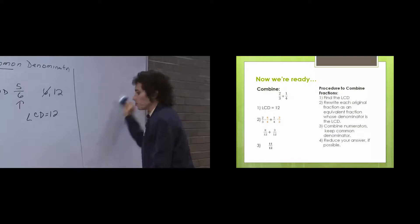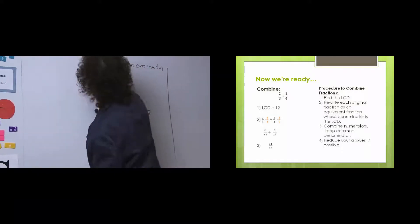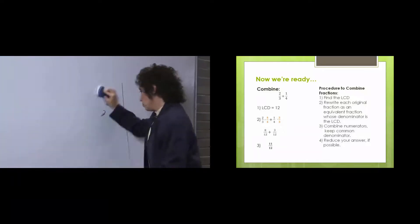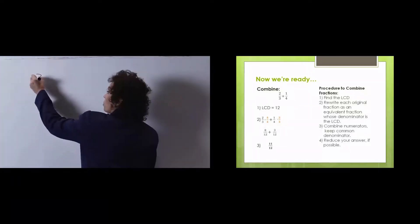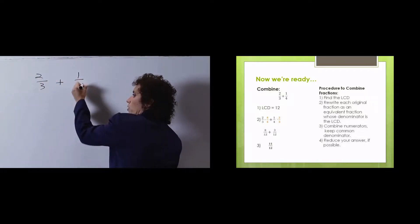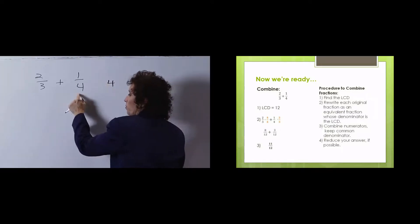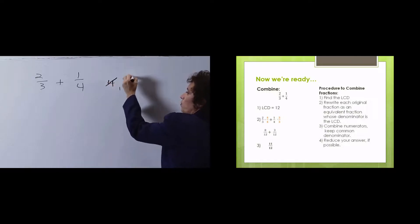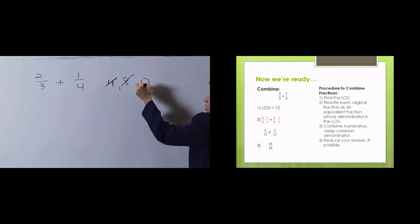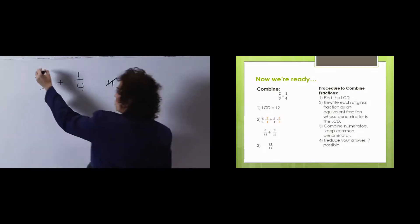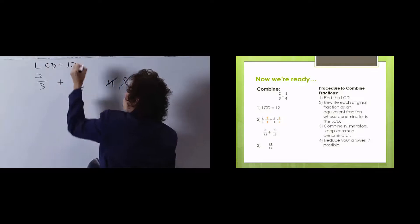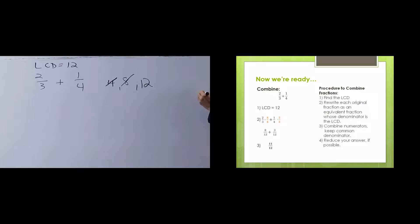Let's go back to 2 thirds plus 1 fourth and do that problem from scratch, talking through the steps. Step 1 is to find the LCD if you don't have one. So I look at the number 4 — 3 does not go into 4, so it's not 4. Then I take multiples of 4. 3 doesn't go into 8, so it's not 8. 12 — 3 does go into 12. We knew it was 12. We did this before.